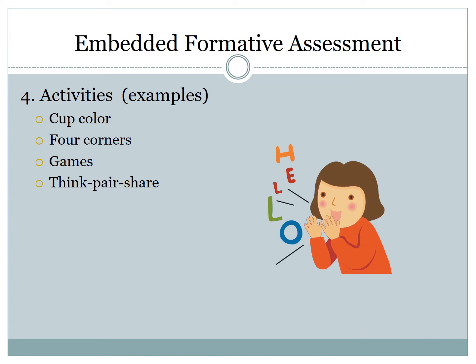Activities can also be embedded formative assessments. Cup colors: ask students to keep a red and green cup on their desk — green on top when they're with you, red on top when they have a question. Some teachers use green, yellow, and red: green meaning 'I'm okay,' yellow meaning 'slow down a little,' red meaning 'I'm completely lost.' Four corners is a fun activity where students get up and go to different corners depending on their understanding — corner one for needing a lot of help, corner two if mostly lost, corner three if they mostly get it, and corner four if they can help others. Games such as spelling and math games also help reveal what students know.